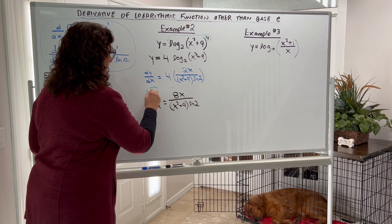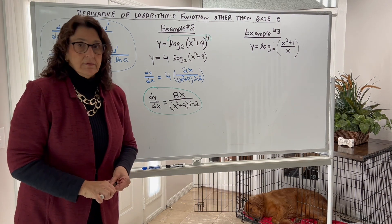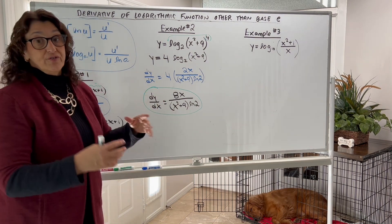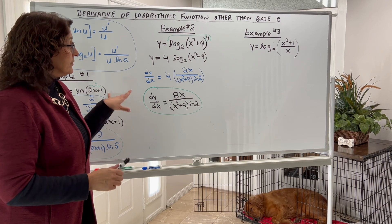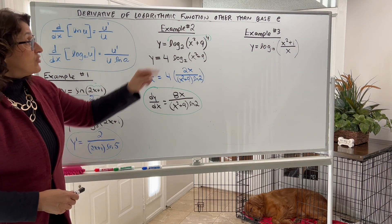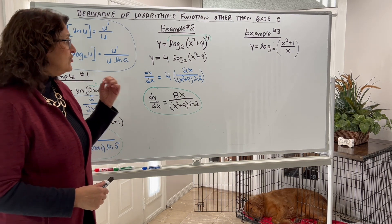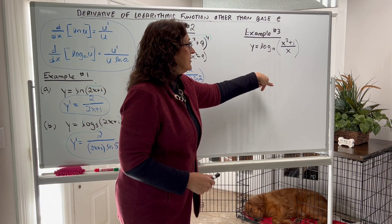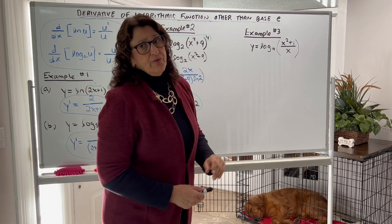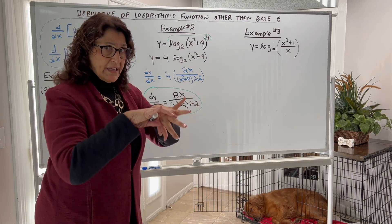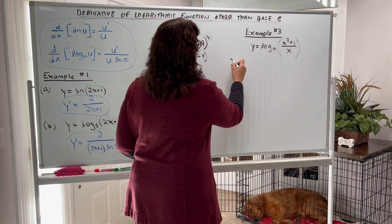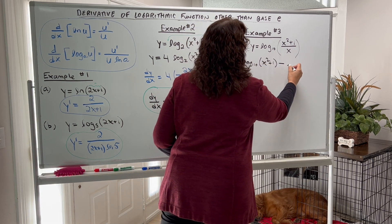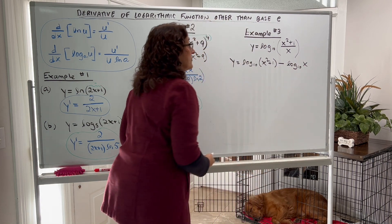So here is the answer, and it's manageable and not too bad when you use your properties to simplify first. Use your properties first, then apply u prime over u times natural log of the base. Let's try one more example. Again, let's use the properties to simplify first. We're going to take the derivative of log base 10 of (x squared plus 1) over x. When you take the log of a quotient, you can write it as two logs and subtract them.